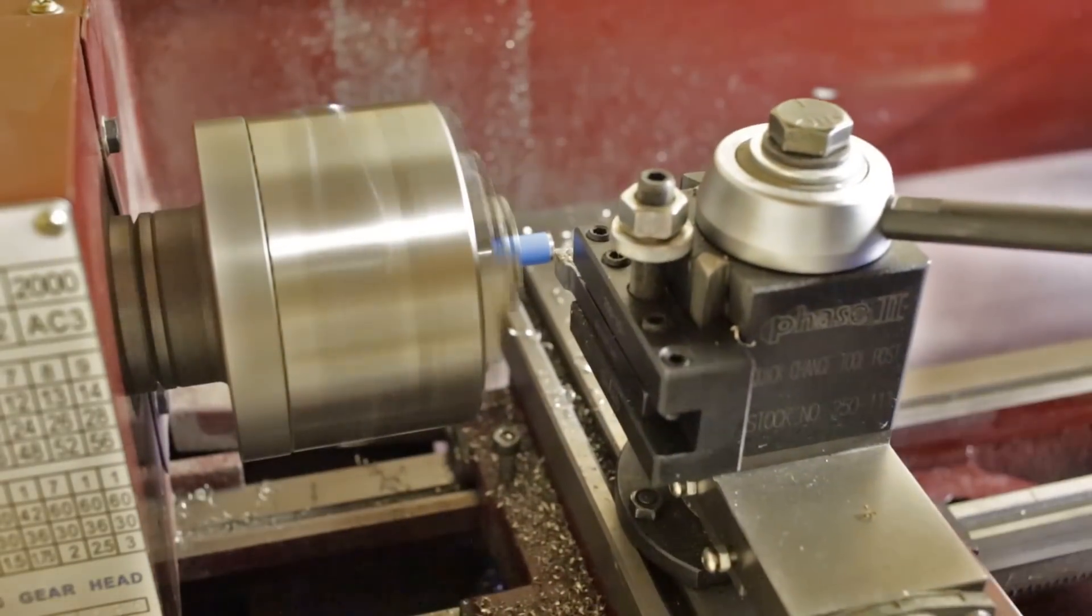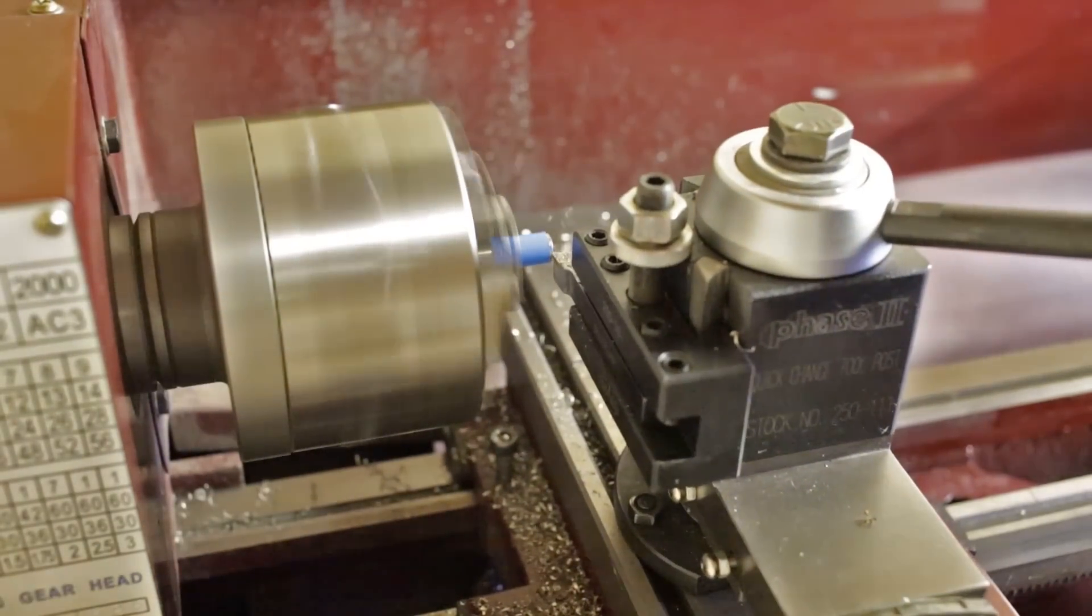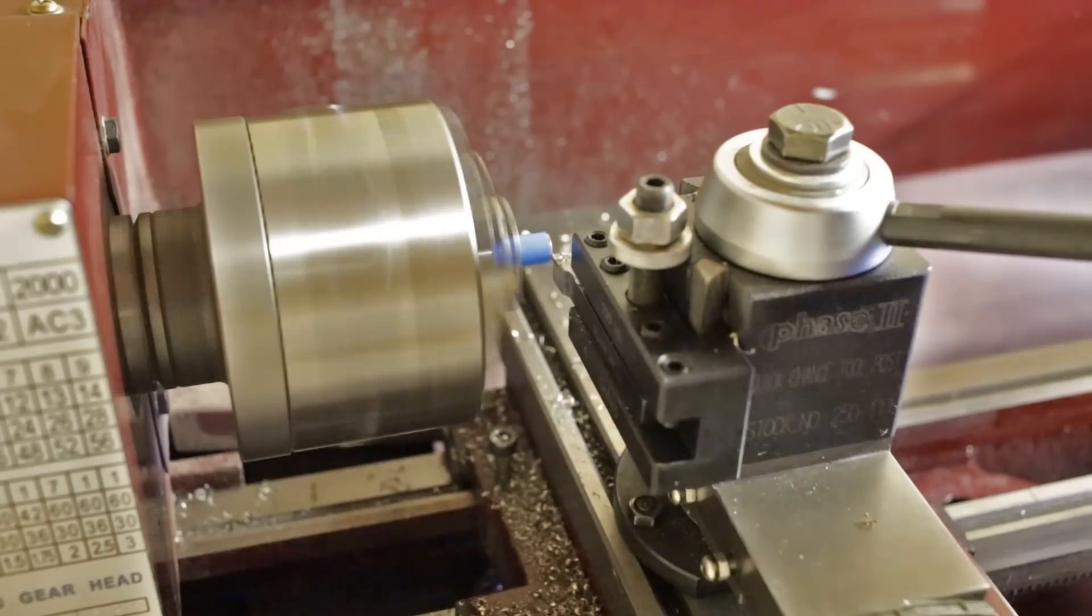I then move this piece back to the lathe and just use a simple facing cut just to clean up that ugly cut from the bandsaw.